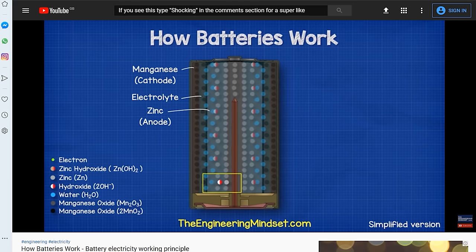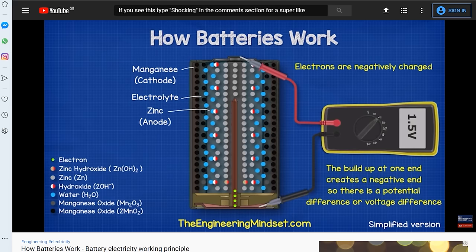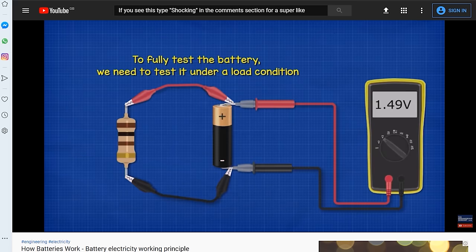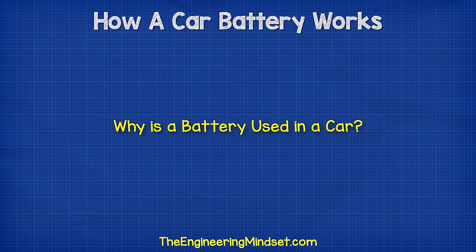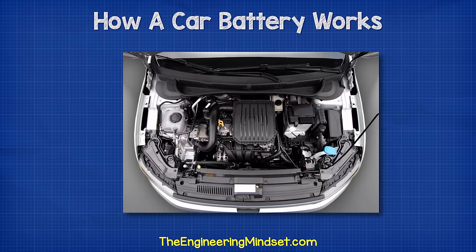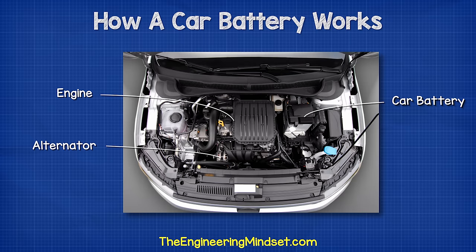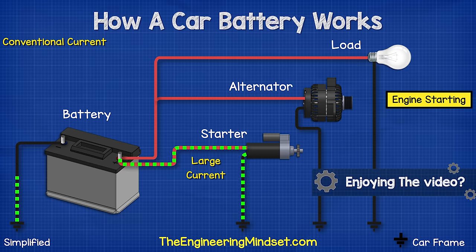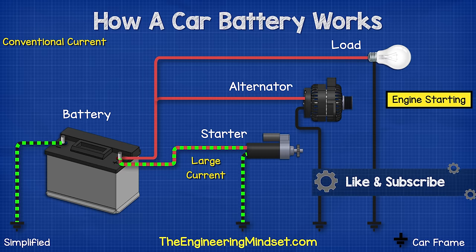We have covered how alkaline batteries work in our previous video — links can be found in the video description below. The typical car battery is found in the engine bay. The battery is first used to start the engine, and it does this by providing electricity to a small electrical motor known as the starter motor.